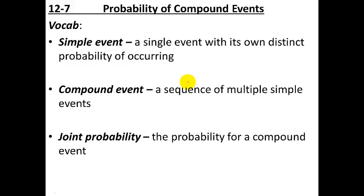Welcome to the final section of chapter 12 that we're going to learn about, which is probability for compound events. Here we'll have just a few vocabulary words and then we'll get lots of examples to kind of suss out what this stuff means.